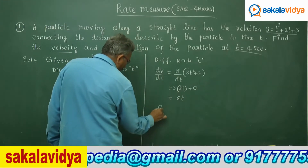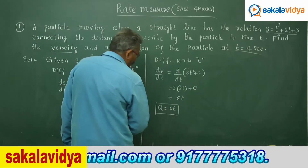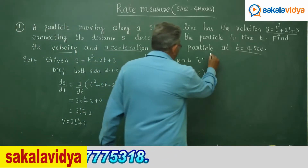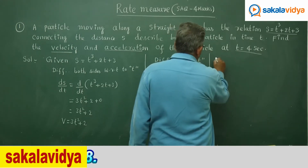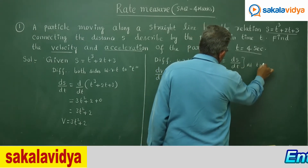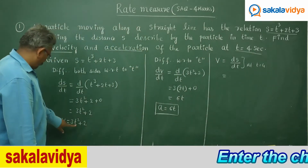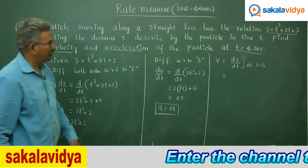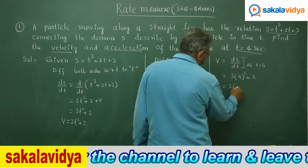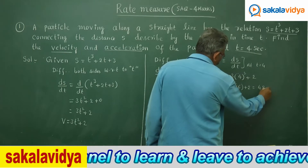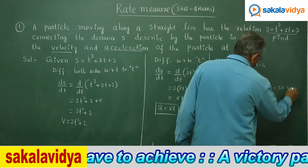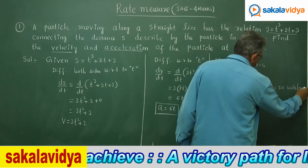Now at the instant t is equal to 4, we need to find out velocity and acceleration. Therefore, v equals ds by dt at t equal to 4 seconds. In place of t, substitute 4: 3 into 4 squared plus 2 equals 3 into 16 plus 2 equals 48 plus 2 equals 50. So velocity is 50 units per second.